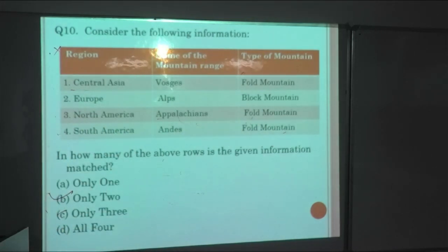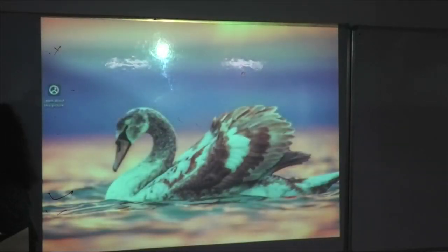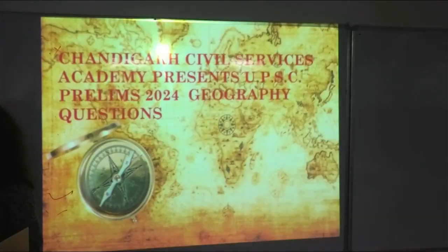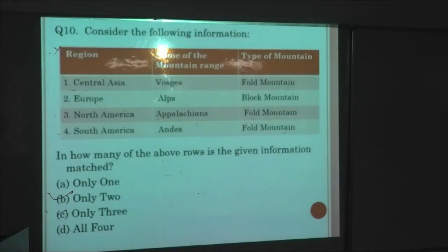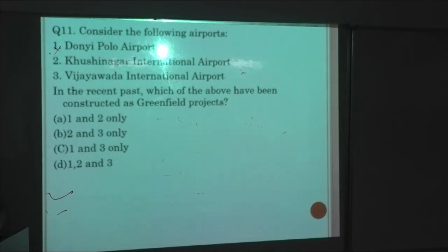Next question is about airports. Consider the following airports: Gaya International Airport, Kushinagar International Airport, Vijayawada International Airport. Which of these are greenfield projects? Yes, first and second are your greenfield. Third one is brownfield. So first and two are correct.